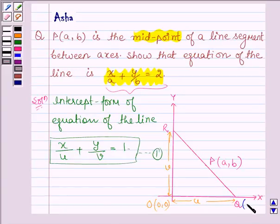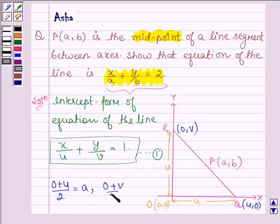The point R has coordinates (0,V) and Q has coordinates (U,0). By midpoint formula, we have 0 plus U upon 2 equals A, and 0 plus V upon 2 equals B.